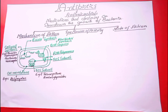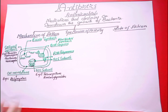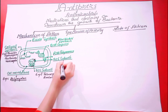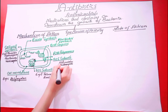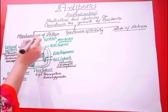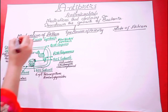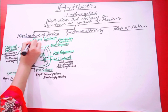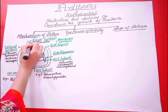Antibiotic agents that inhibit the 50S subunit of ribosomes include macrolides, clindamycin, and chloramphenicol. There are also antibiotics that inhibit folate synthesis of the bacterial cell; examples are sulfonamides and trimethoprim.